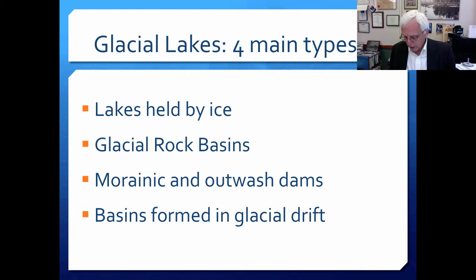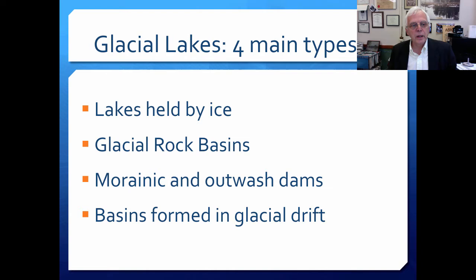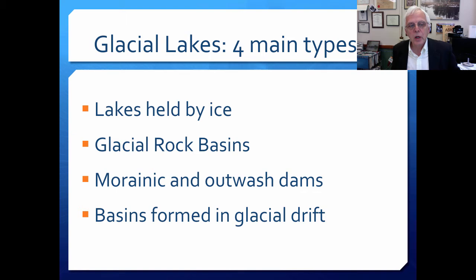Glacial lakes are very numerous. As I mentioned when showing the latitudinal distribution of lakes, in the glaciated north temperate zone there are lots of lakes. There are different kinds: basins formed in glacial drift, lakes held by living glaciers, glacial rock basins, and morainic and outwash dams — which function much like landslide lakes. Key terms to know include drift, till, and moraines. Drift is material laid down directly by ice or deposited by glacial activity; till is a mish-mash of drift material.